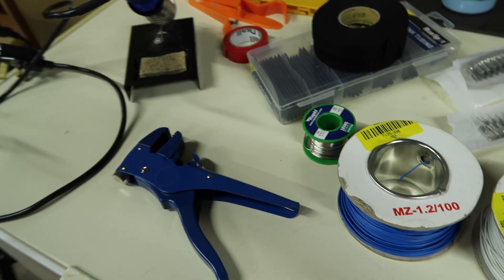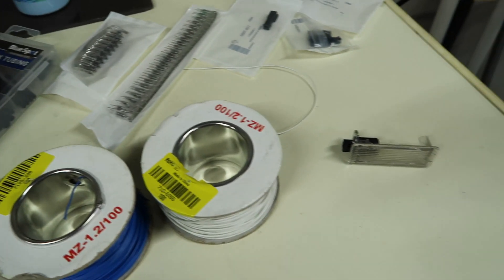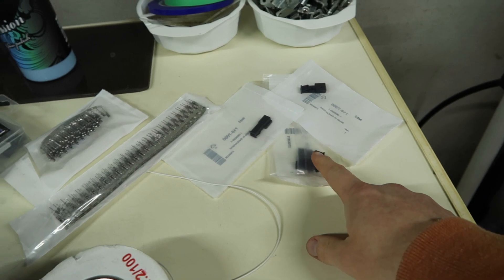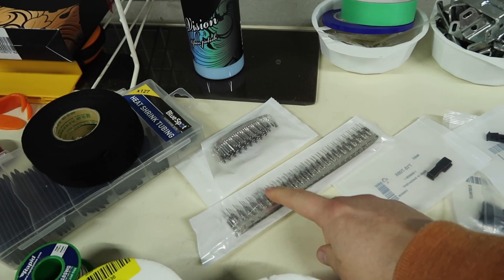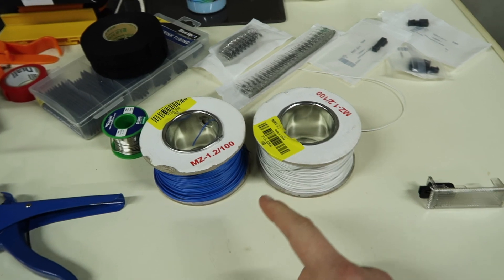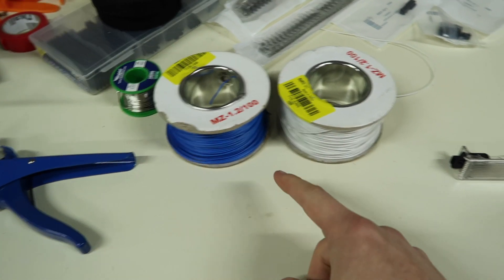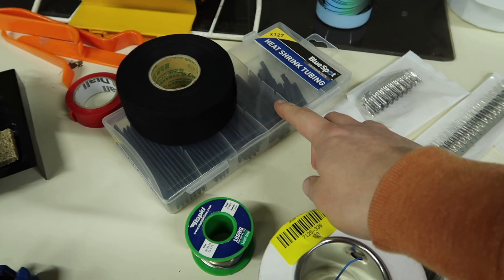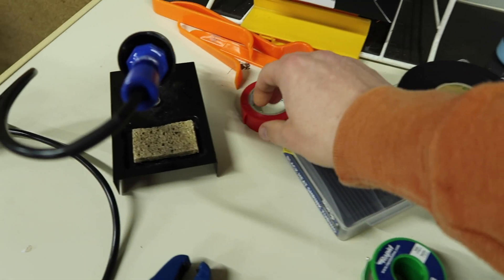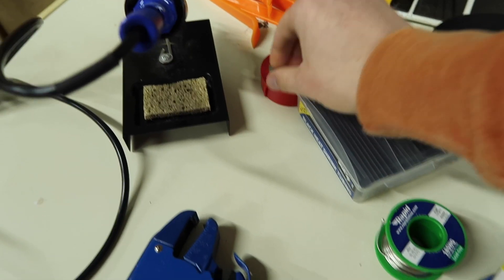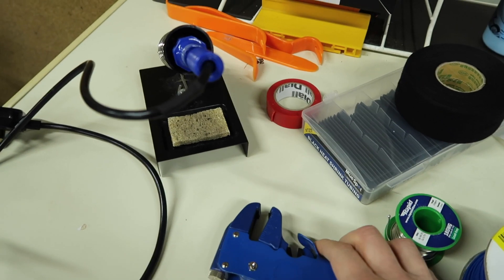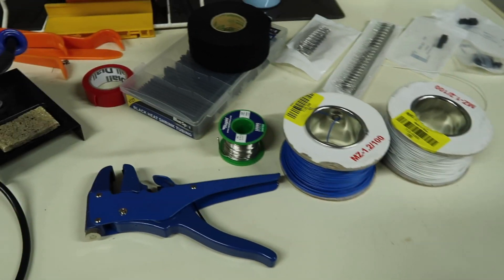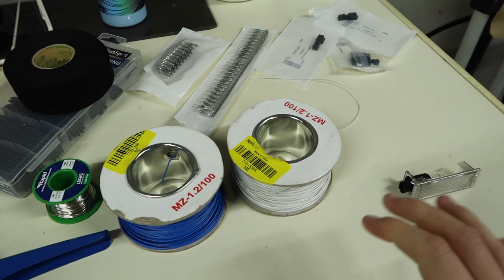Here is most of the stuff we need to make our new wiring loom. We have our new housing with a stock bulb, connectors and contacts, blue and white wire, good quality solder, heat shrink tubing, loom tape, insulating tape, wire strippers, and a soldering iron. We might need pliers but that's the main stuff.